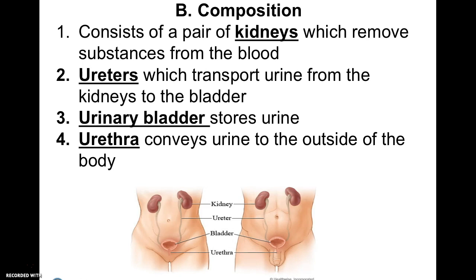Now we're going to talk about the composition — in other words, the anatomy. You have two kidneys in the back of your body, so if you ever have back pain, sometimes that can be a signal of kidney issues or a kidney stone. From the kidneys to the bladder, you have ureters, which transport the urine. The kidneys are where all the filtration occurs; once fluid is in the ureters, it is urine. It is stored in the urinary bladder until it gets too full, and then the urethra conveys urine to the outside of the body.